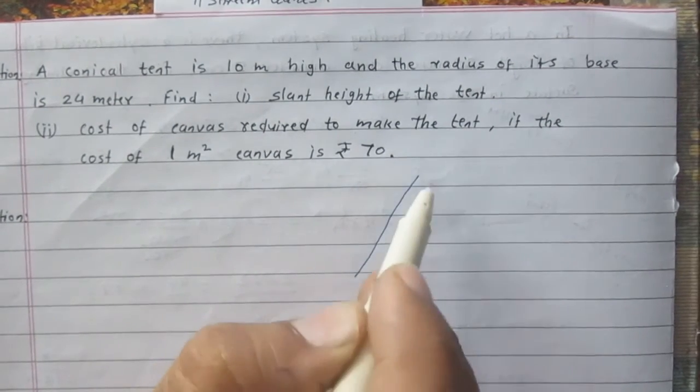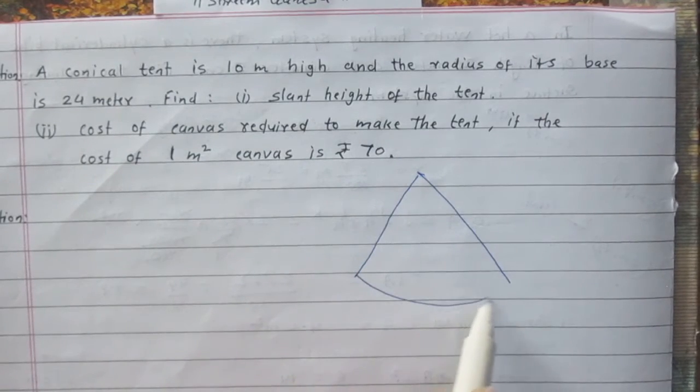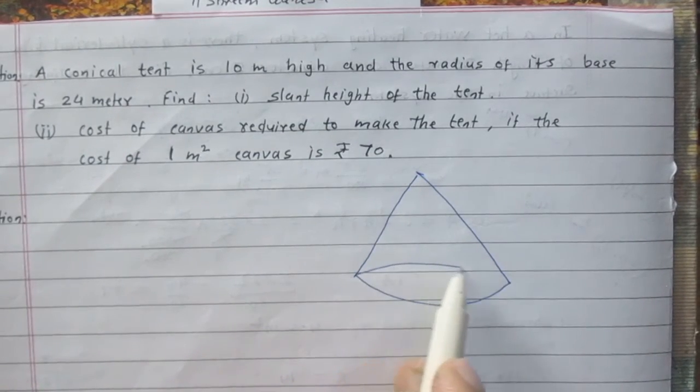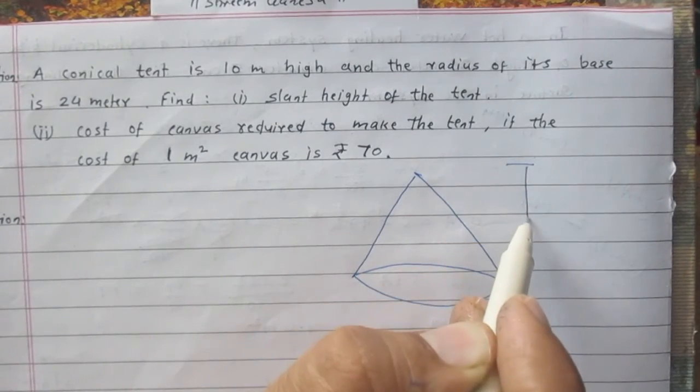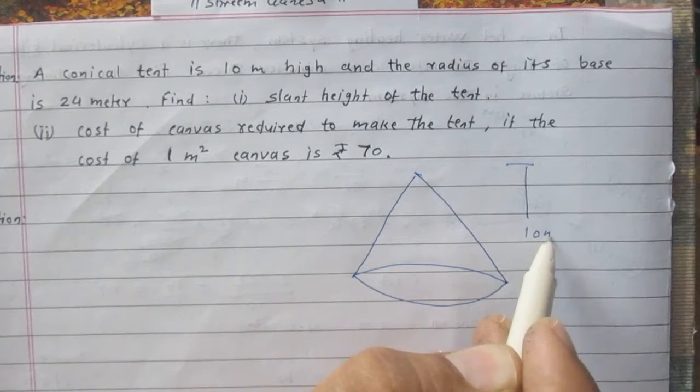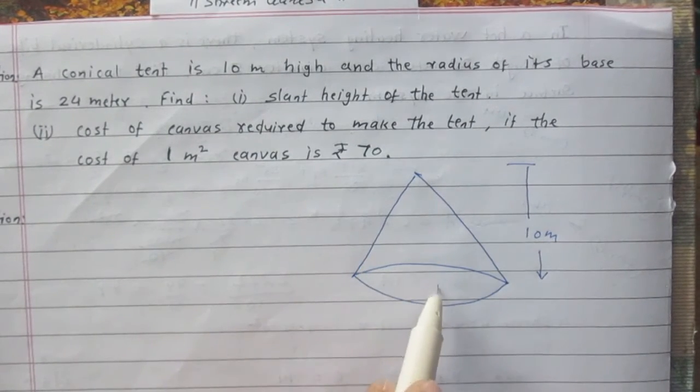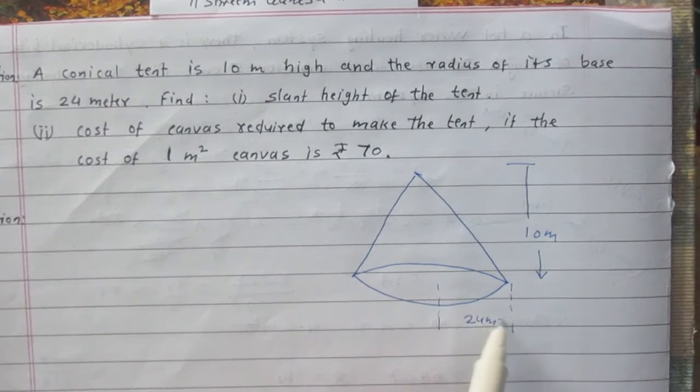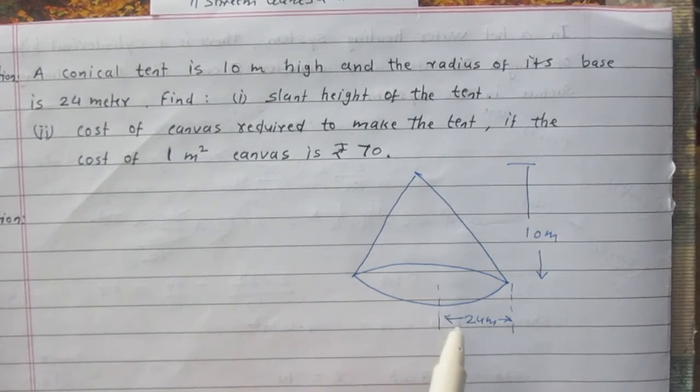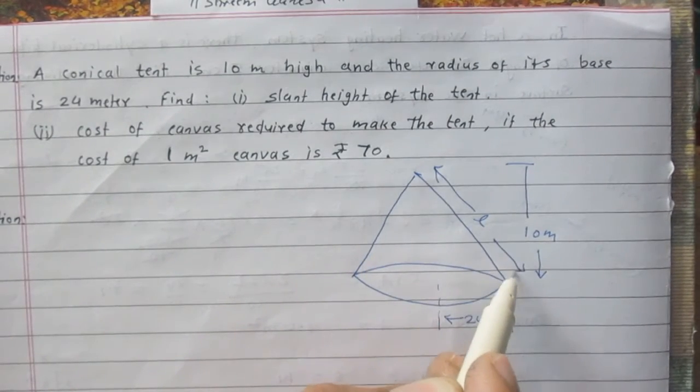Let us understand this question according to the diagram. Suppose this diagram represents the conical tent where height of the conical tent is 10 meter and the radius of its base is 24 meter. And we are to find in the first part the slant height of the conical tent.